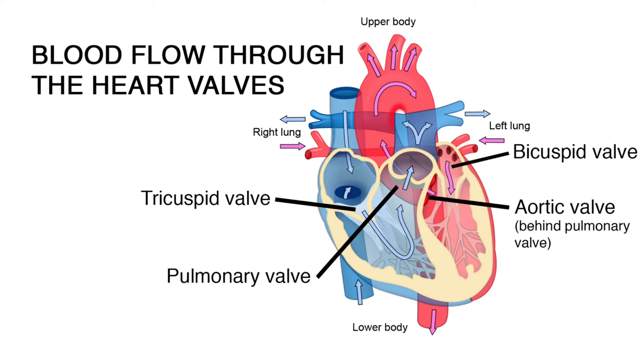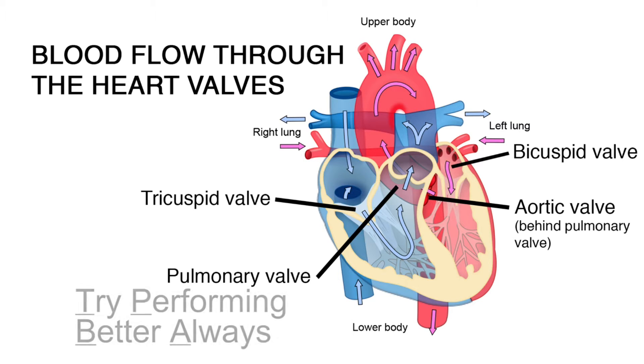Sound confusing? Just remember: 'Try Performing Better Always' for the order of blood flow through the valves — Tricuspid, Pulmonary, Bicuspid, and Aortic.